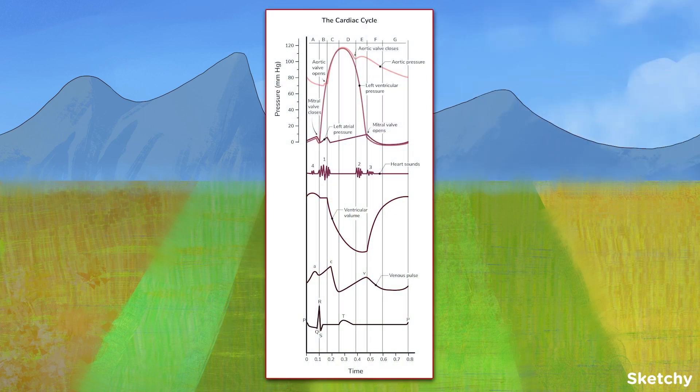Collectively, these events make up what is known as the cardiac cycle and cover everything from the start of one heartbeat to the beginning of the next. Given all that happens in what is typically less than a second of time, it can be helpful to start by breaking this cycle down into two basic parts.